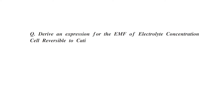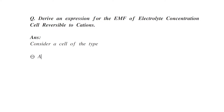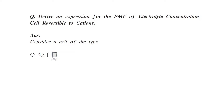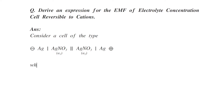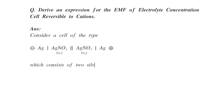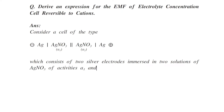Derive an expression for EMF of an electrolyte concentration cell reversible to cation. Consider a cell where silver is in contact with silver nitrate of activity A1, and another electrode is silver in contact with silver nitrate of activity A2. These two electrodes are separated by a salt bridge. This cell consists of two silver electrodes immersed in two solutions of silver nitrate of activity A1 and A2.